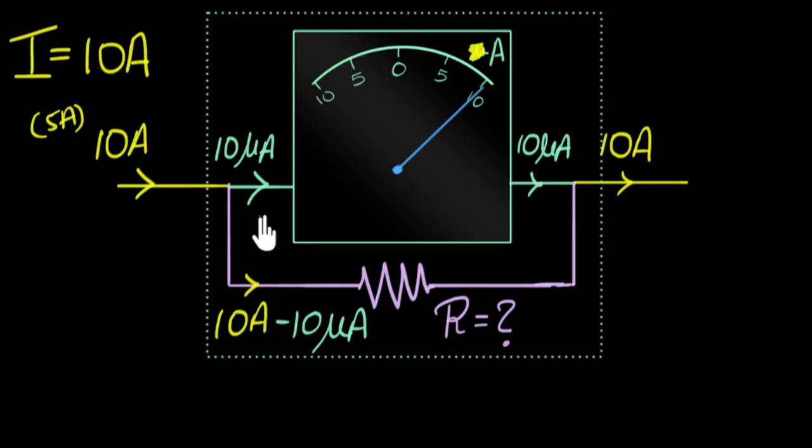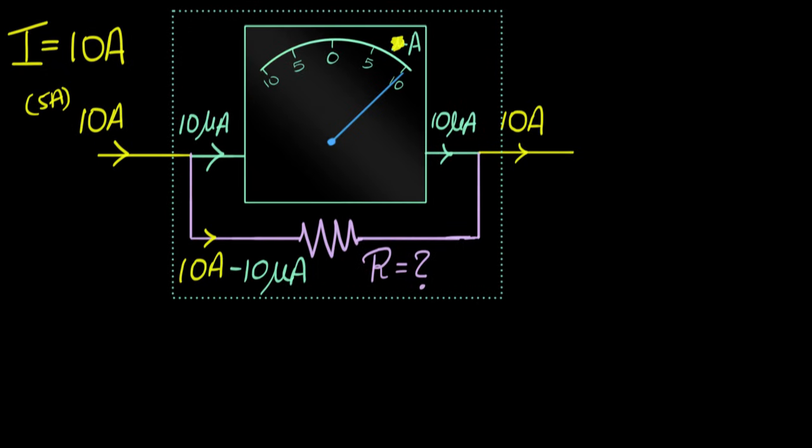All right, here's how I like to think about it. Because these two are in parallel, they would have the same voltage. And so I would build the equation by saying the voltage across the galvanometer must be exactly equal to the voltage that gets built across this resistor. So what's the voltage across my galvanometer? Well, V equals IR, Ohm's law. And so the voltage across my galvanometer is going to be the current through the galvanometer. So that's going to be 10 microamperes times the resistance of that galvanometer.